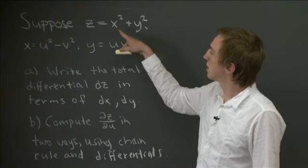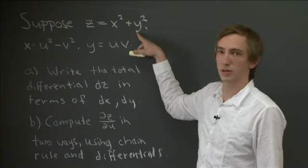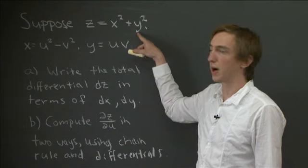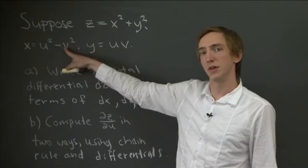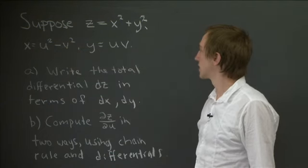So we have a function z, which is x squared plus y squared, so it depends on the two variables x and y. Now, the variables x and y themselves depend on two auxiliary variables, u and v. So that's the setup that we have.